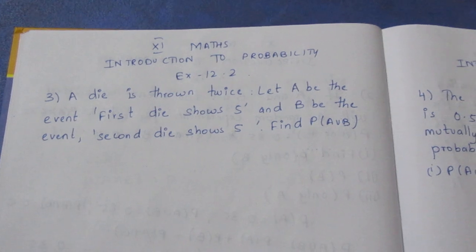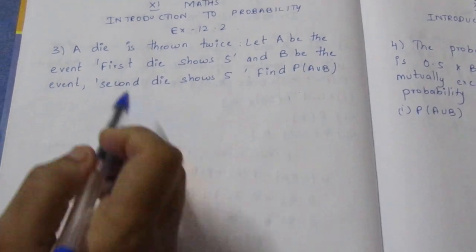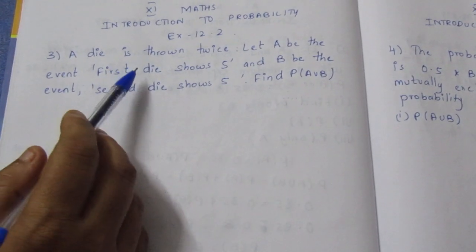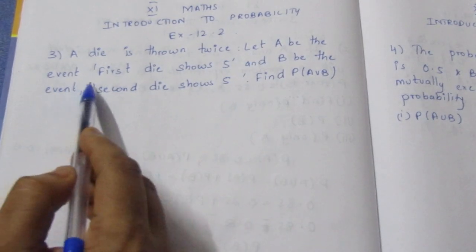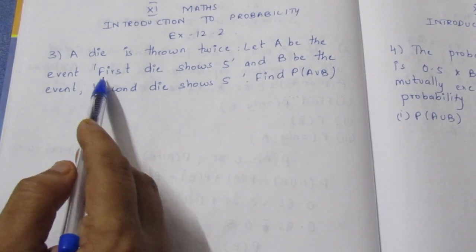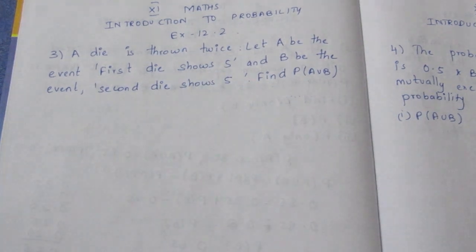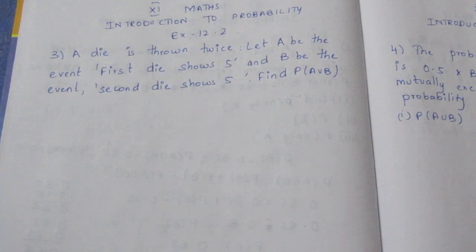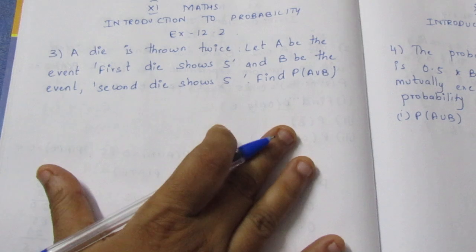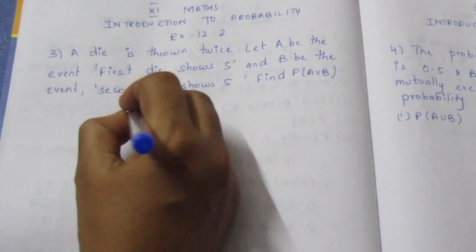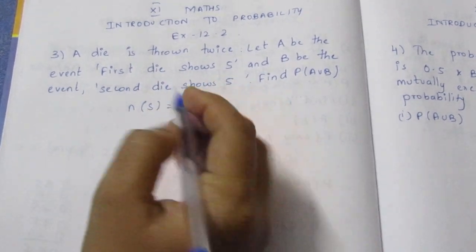When a die is rolled twice, the sample space outcomes start as 1,1 — 1,2 — 1,3 and so on. Let A be the event. We have N of S, the sample space, with 36 outcomes.